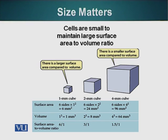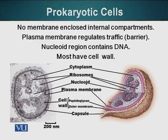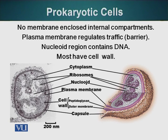Now let's move on and look at the smallest cell — the prokaryotic cell. The important feature of prokaryotic cells is that they do not have membrane-enclosed organelles. We will contrast this when we talk about the eukaryotic cell, and we have seen some of them in the animation. Prokaryotic cells, like bacterial cells for example, do not have membrane-enclosed organelles. These cells don't even have a nucleus.